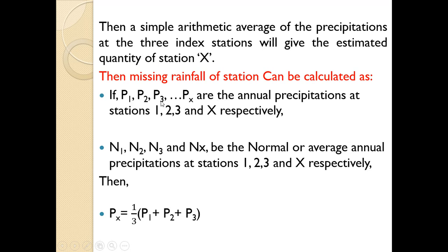If P1, P2, P3 and Px are the precipitations at stations 1, 2, 3 and X, and N1, N2, N3 and Nx are the normal or average annual precipitations at stations 1, 2, 3 and X respectively, then the average precipitation of missing station X is equal to the average of all three index stations: (P1 + P2 + P3) divided by 3 will give the missing rainfall of station X for that day.